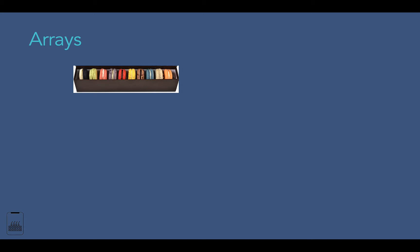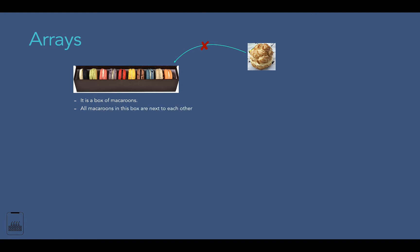Let's quickly examine one of these real-life array structures. We will look at a box of macarons, which is very similar to an array data structure. Looking carefully at this box, we can identify the main properties. First, this box holds macarons — it is produced specifically for macarons, so you cannot store a cream puff in it because it will not fit. Second, all macarons in this box are next to each other with no gap between them, meaning they are contiguous.